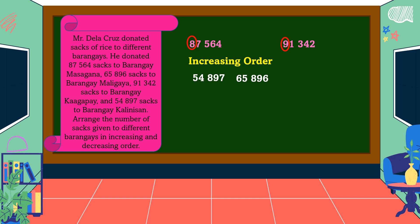The third number — comparing 8 and 9, which is smaller? Eight is smaller than nine, so the third number is 87,564. The last number, or the largest, is 91,342. This is how we arrange numbers from smallest to greatest, or in increasing order.